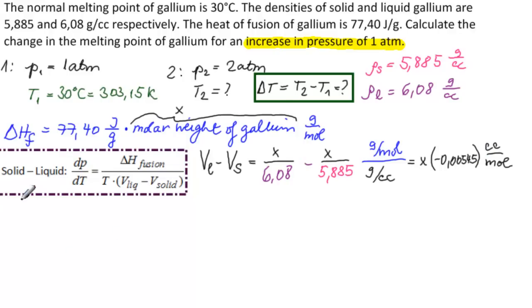Let us see what we have. We have dp/dt is equal to 77.40x joules per mole divided by T, and then we have x times minus 0.00545 cubic centimeters per mole. So we can see that the x cancel. So we don't need to go find the molar weight of gallium. We can see that the moles cancel. And that we have joules versus volume, which gives us pressure. And we have Kelvin here. So all our units are correct.